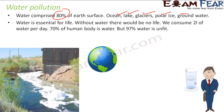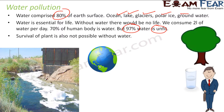We consume almost 2 to 3 litres of water per day, and 70% of our body is water. But the sad part is, 97% of water on earth is unfit to drink because most of it is salty, like ocean water.